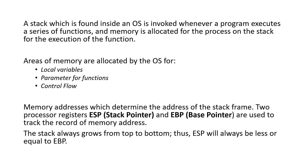Memory addresses determine the address of the stack frame. The two process registers — the stack pointer and the base pointer — are used to track the record of memory addresses. The stack always grows from top to bottom, thus the stack pointer will always be less than or equal to the base pointer.